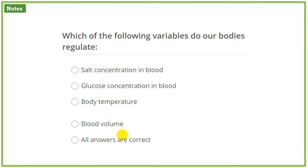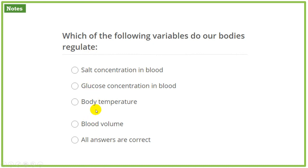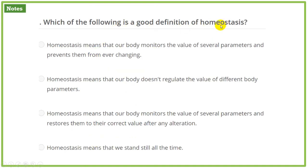Here are some questions on screen. Which of the following variables do our bodies regulate? Salt concentration in blood — yes. Glucose concentration — yes. Body temperature — yes. Blood volume — yes. It means all answers are correct. The body regulates and maintains all of these at their set points, so we select 'all answers are correct'.